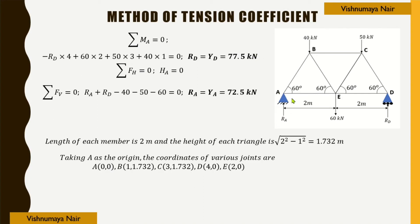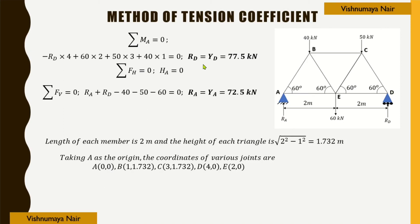Here we have a hinged joint, so there will be a horizontal reaction HA at joint A. Looking at the entire frame, there are no other horizontal forces at any of the other joints, so considering summation FH = 0 gives HA = 0.